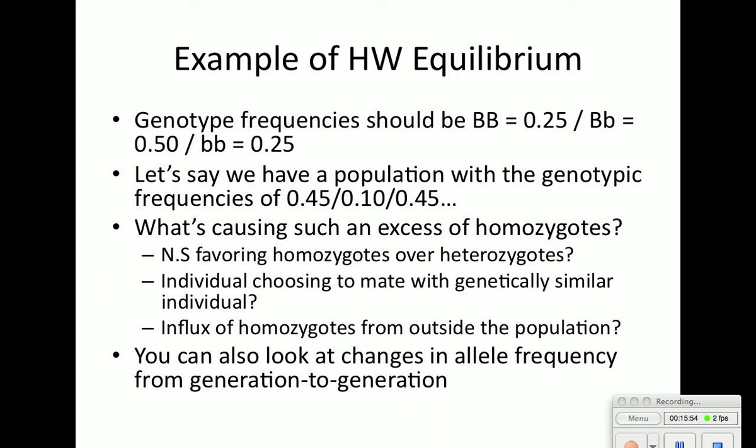With Hardy-Weinberg equilibrium, the genotypic frequency should be 0.25 dominant to 0.50 hybrid to 0.25 recessive. But if a population is slightly different — say 0.45, 0.10, 0.45 — we ask what's causing the excess of homozygotes. Is natural selection favoring homozygotes? Are individuals choosing mates similar to themselves? Or is there an influx of homozygotes from outside the population? We can examine each question.